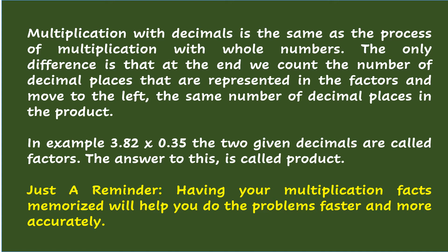In example 3 and 82 hundredths times 35 hundredths, the two given decimals are called factors. The answer to this is called the product. Just a reminder, having your multiplication facts memorized will help you do the problems faster and more accurately.